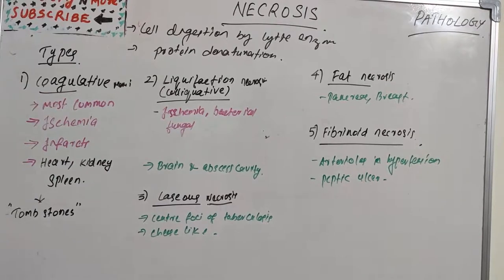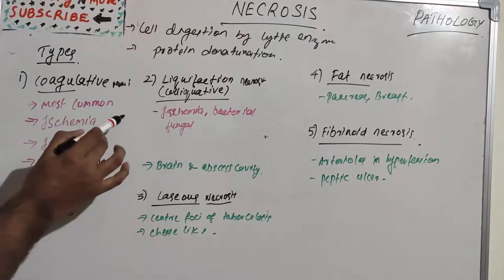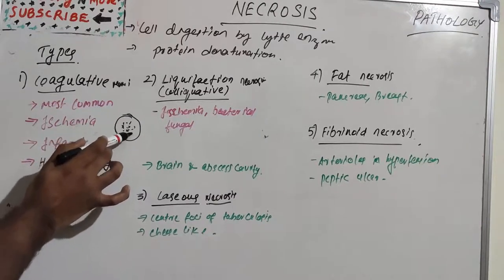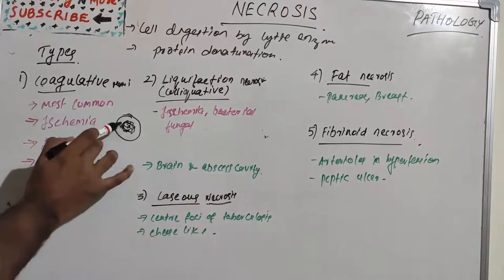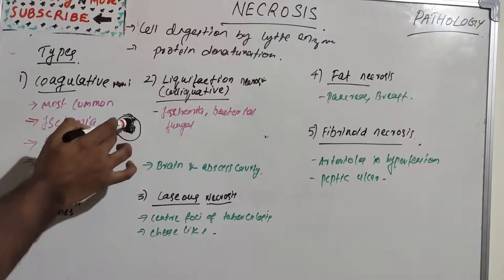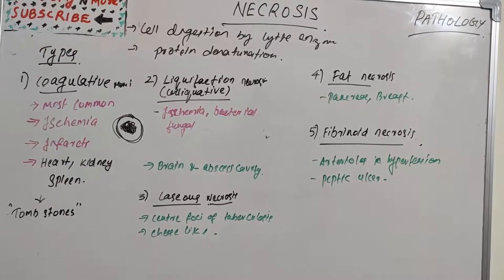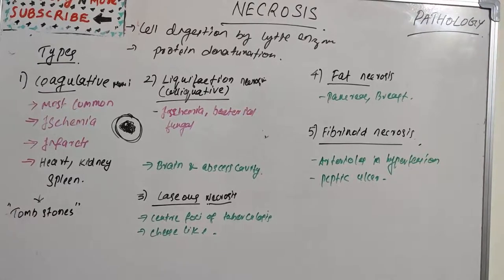Coagulative necrosis is the form of tissue necrosis in which the component cells are dead but the basic tissue architecture is preserved for at least several days. The inside cells are dead but the structure is maintained. The affected tissue takes on a firm texture, and the injury denatures not only the structural proteins but also enzymes.